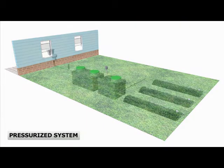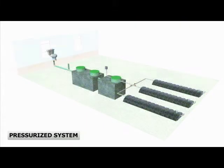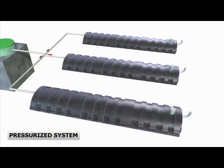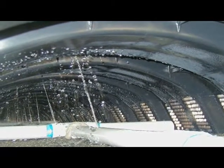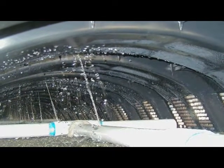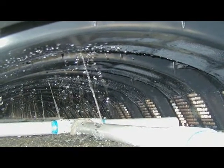A pressurized system has a second tank that houses a pump, which allows the effluent to be pumped to pressurized pipes in the drain field. The drain field starts with a manifold that splits the wastewater evenly between a series of pressurized pipes, where the effluent is distributed over the drain field area through small holes in the pipes.